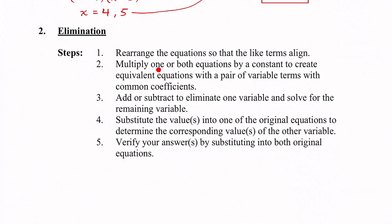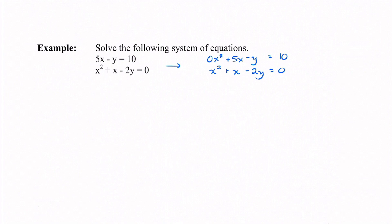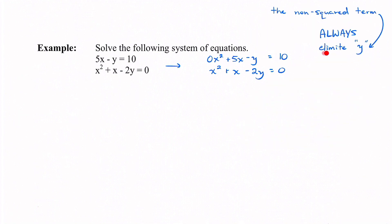Step 2: multiply one or both equations by a constant to create equivalent equations with a pair of variable terms with common coefficients. Because we have one linear and one quadratic equation, we can't eliminate the squared terms, so we always eliminate the y — it's the non-squared term. To eliminate y, both equations need the same coefficient in front of y.